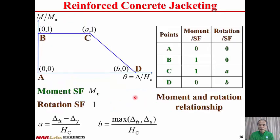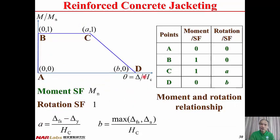The final hinge parameters are: Point A(0,0), B(0,1), C(a,1), D(b,0), with moment scale factor equal to M_n (the moment strength of the original column) and rotation scale factor equal to 1. This hinge parameter is applicable for both the original column and the Reinforced Concrete Jacketed column.